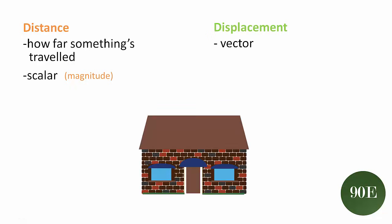Say for example this is your house. If a friend told you that they traveled two kilometers to get to your house, well that would be the distance that they traveled. But what you don't know is what direction they came from. Did they come from the left or from the right? Who knows?